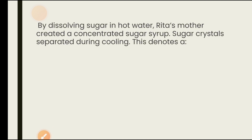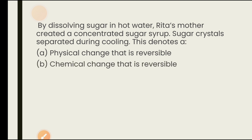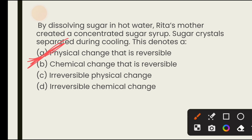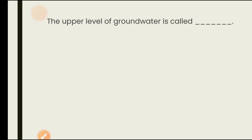By dissolving sugar in hot water, a concentrated sugar syrup was created, and crystals separated during cooling. What does this denote? Options are physical change that is reversible, chemical change that is reversible, irreversible physical change, irreversible chemical change. When sugar dissolves in hot water and crystals reform on cooling, this is a physical change — it is reversible. The answer is physical change that is reversible.